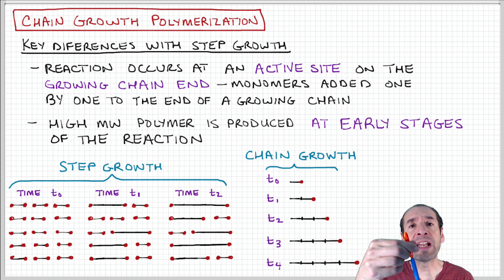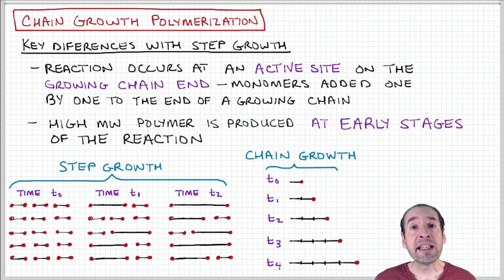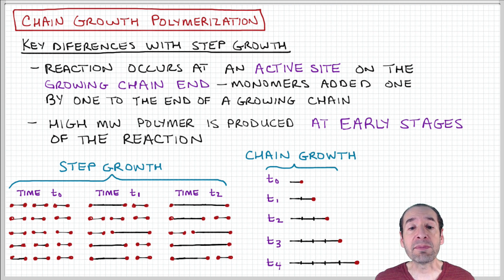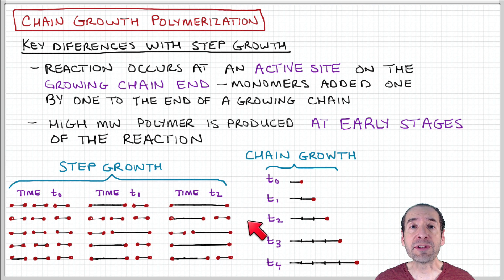As a result of this mechanism, high molecular weight polymers are formed very early in the reaction process, because those are the stages where you have the most amount of monomer present in your reaction mix. This is a key difference between step growth and chain growth polymerization — the way in which the process evolves over time.